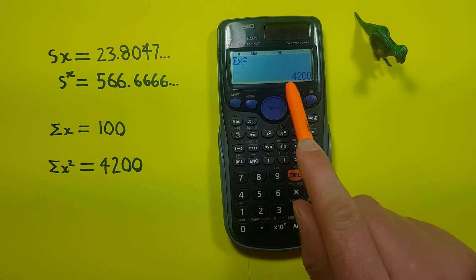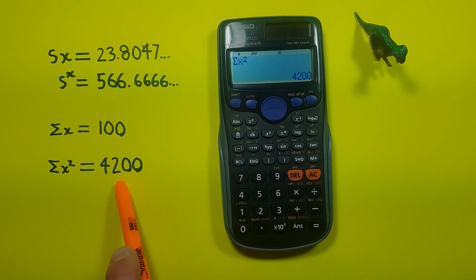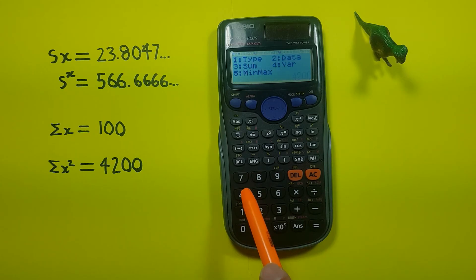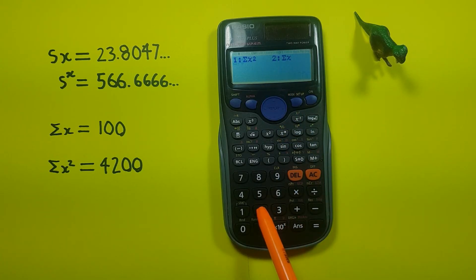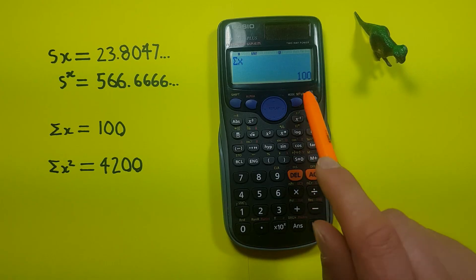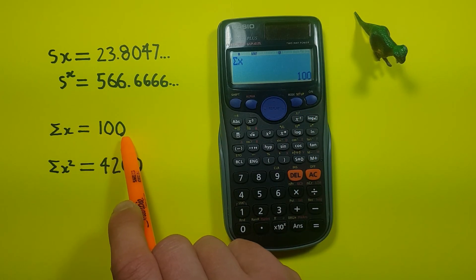Which gives us 4200, yep. Or we can go shift stat 3 and our sum with number 2. And we see this gives us 100, which makes sense because remember our data set was 60, 20, 10, 10, which should add up to 100.